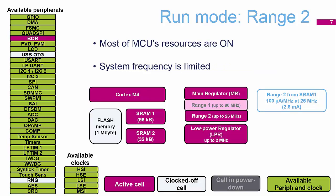In run mode range two, the main regulator is selected as range two, which limits us to 26 megahertz. In range two you get the most optimal current consumption — 100 microamps per megahertz — and we run from SRAM bank one. As you can see on the diagram, two peripherals have gone white: the USB cell and the random number generator are no longer available, because we've limited the device to 26 megahertz and 48 megahertz is needed to run the USB.